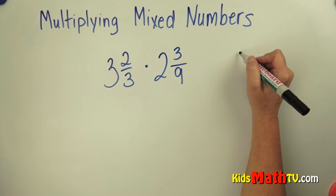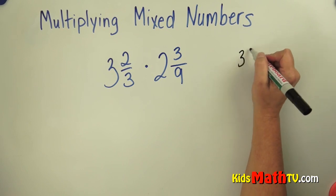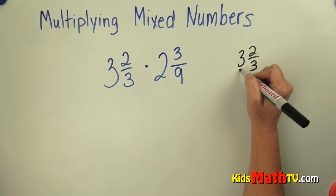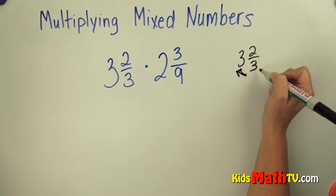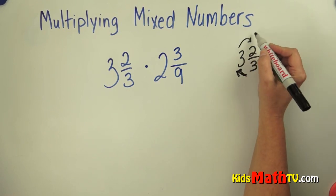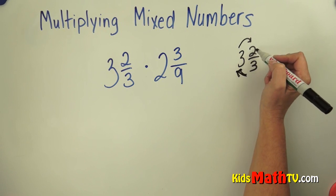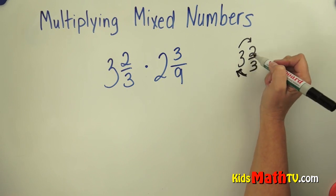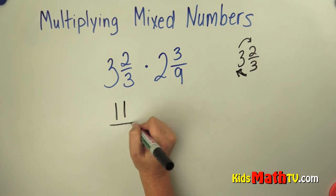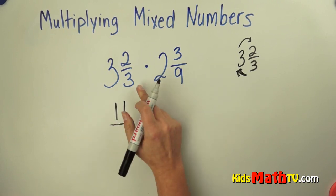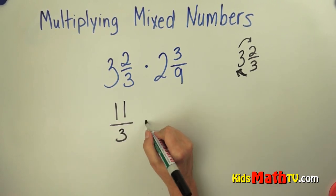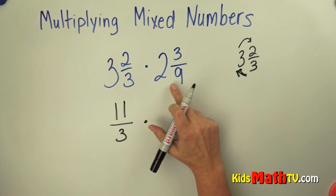To do that, we take 3 and 2 thirds and we multiply. 3 times 3 is 9, and then we add 2 more. So 3 times 3 is 9 plus 2 more is 11. We have 11 over the denominator 3.